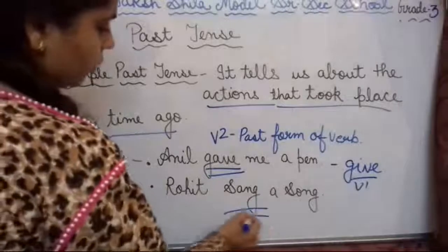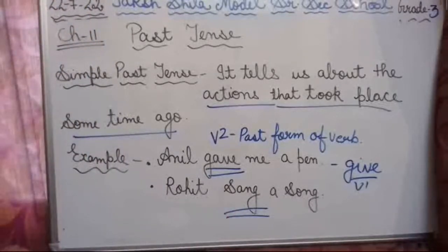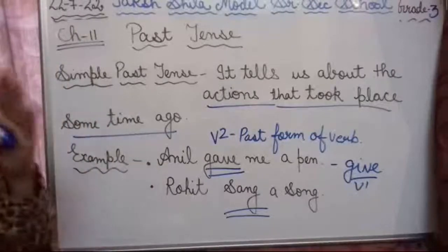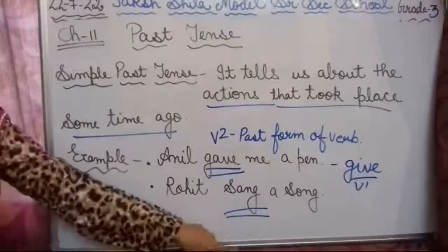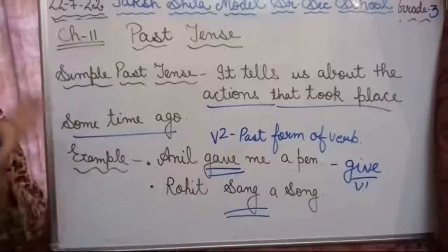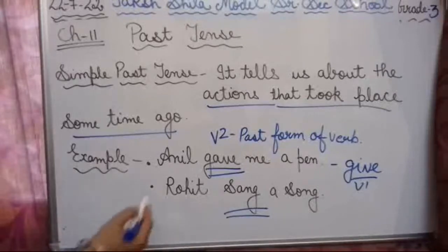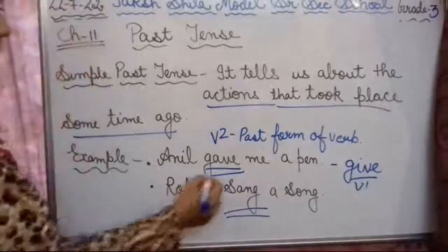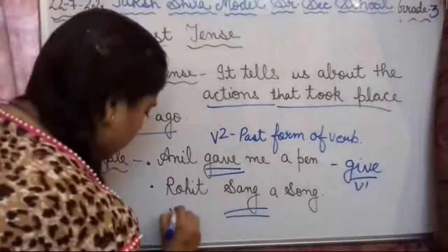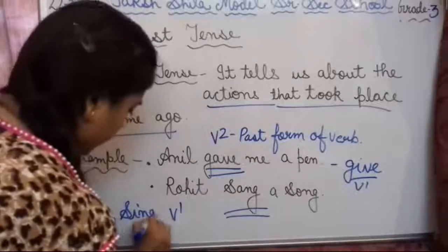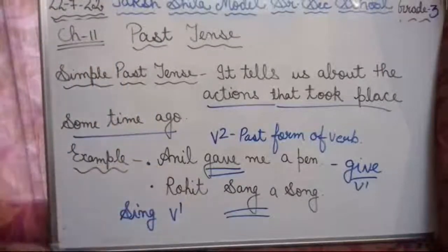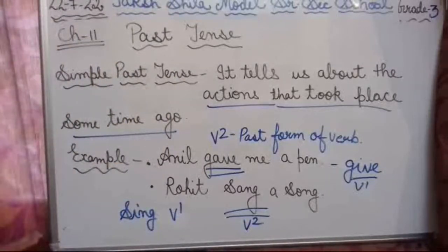Second example: 'Rohit sang a song.' We have to focus on the verb — from the verb you can identify which tense it is. You can identify whether it is present tense or past tense from the verb form. Here, 'Rohit' is the subject and the verb is 'sang.' The first form is 'sing,' and 'sang' is the V2 form — the second form, which means the past form of the verb.